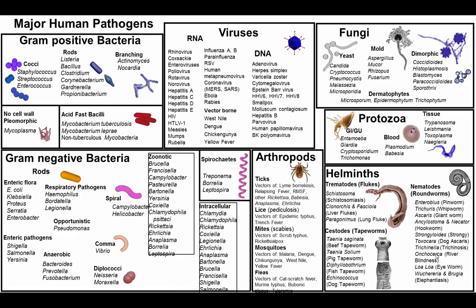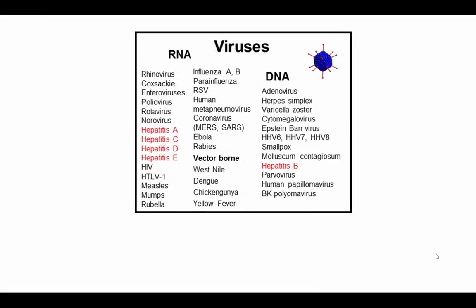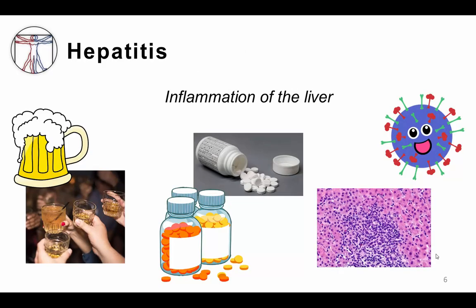I'm going to be talking today about the viral causes of hepatitis, and in particular the hepatitis viruses, which are highlighted here and can be recognized by their association with a letter such as hepatitis A, B, C, etc. Most simply put, the term hepatitis means inflammation of the liver, and there are many different causes: toxins including alcohol, prescription and over-the-counter medication overdoses, autoimmune conditions, lack of sufficient blood supply to the liver such as in a state of shock, and also infectious etiologies.